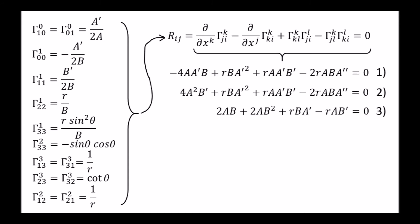If we now plug these into Einstein's field equations for vacuum, we end up with these three equations. All other terms of the Ricci tensor are either zero or equal to one of these three equations.